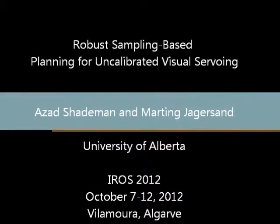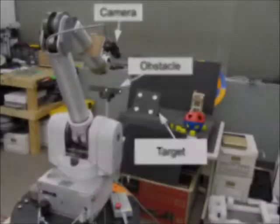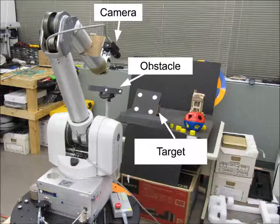This video shows a simple experiment to accompany our IROS 2012 paper. The experimental setup consists of a WAM arm with one camera mounted on the elbow, a planar target object with four points, and a simple obstacle represented by two points.